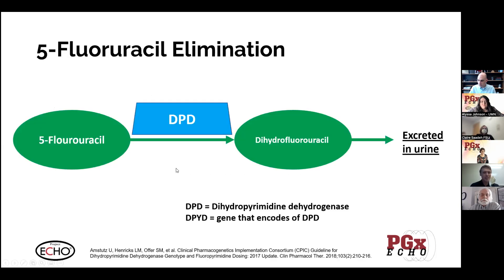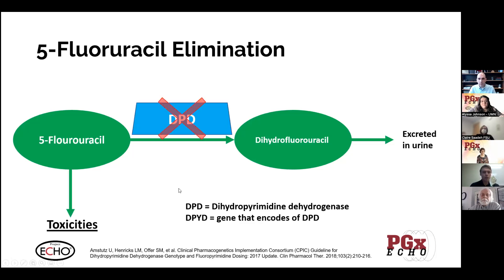Moving into pharmacogenomics: capecitabine is a prodrug of 5-fluorouracil, and once converted, 5-fluorouracil is eliminated from the body mainly through the enzyme dihydropyrimidine dehydrogenase, or DPD. DPD makes fluorouracil more hydrophilic, allowing it to be excreted in the urine. DPD is generated by the gene DPYD. If you have deficient DPYD, you won't generate the DPD enzyme, fluorouracil will not be eliminated, it will accumulate in the body, and cause serious toxicities.